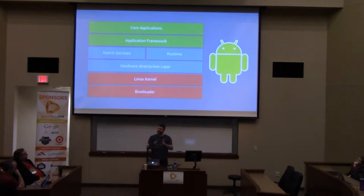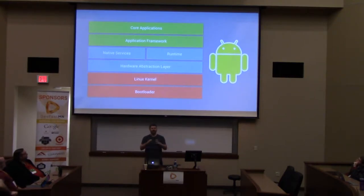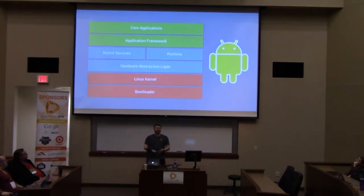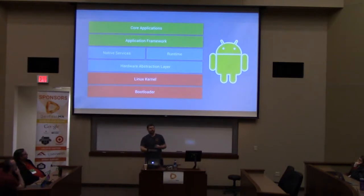Android has some middleware pieces that are more specific to the Android platform, things like the hardware abstraction layer — which, if you've never heard of that, is sort of like Android's device drivers. This is what manufacturers provide as part of an Android device to make your camera and sensors work. They have these device drivers in the layer, plus a series of native services and the application runtime.